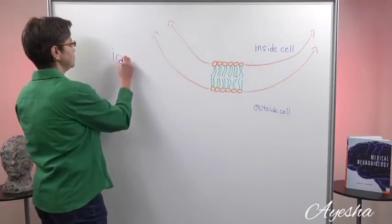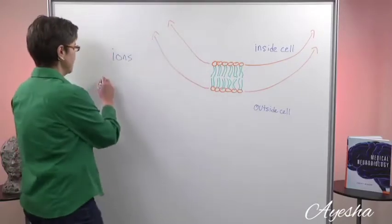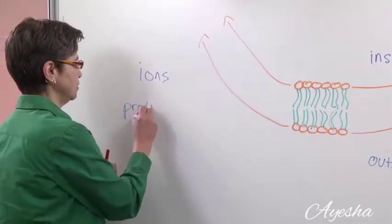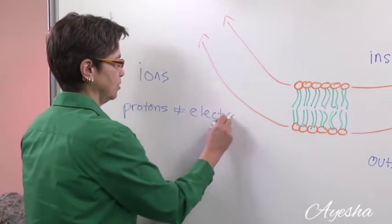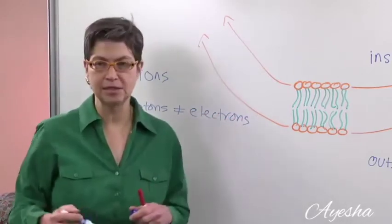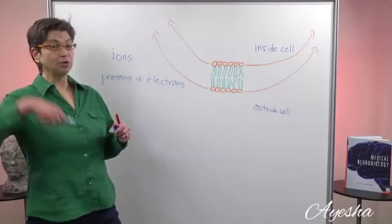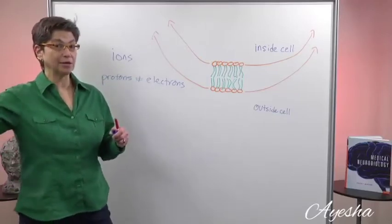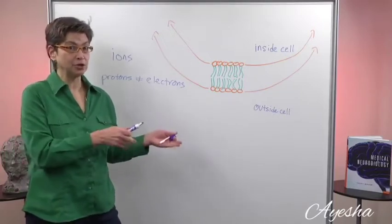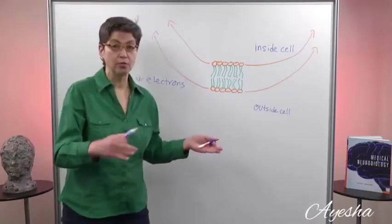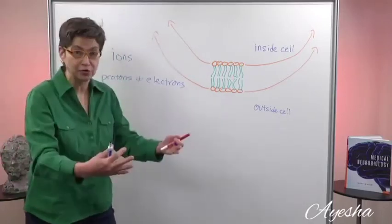So ions are simply molecules where the number of protons is not equal to the number of electrons. Another way to think about this is these molecules have either lost an electron or two, and now they're positively charged, or they've gained one. One has come on to this molecule and then they're negatively charged.